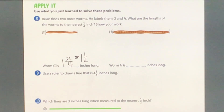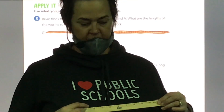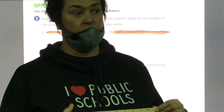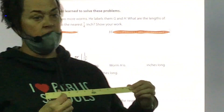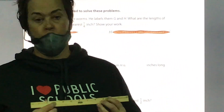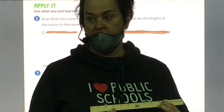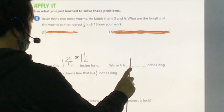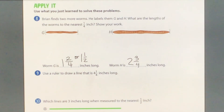Measuring earthworm H — is it less than an inch? No. Is it at least two inches? Yes. Is it three inches? No. So let's go back to two inches. Is it two and one-fourth inches? No. Is it two and two-fourth inches? No. Is it two and three-fourth inches? Yes. Is that the closest one-fourth measurement? Yes. So what did you answer for H? Two and three-fourths — two and three-fourths inches long.